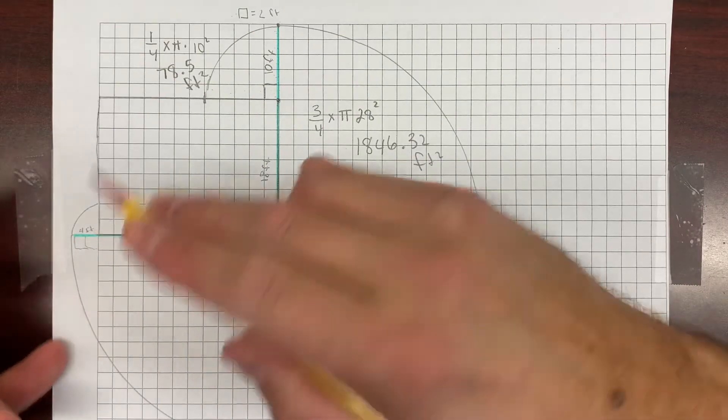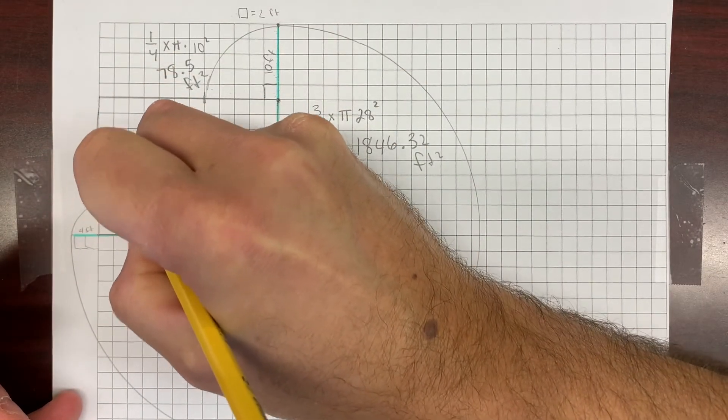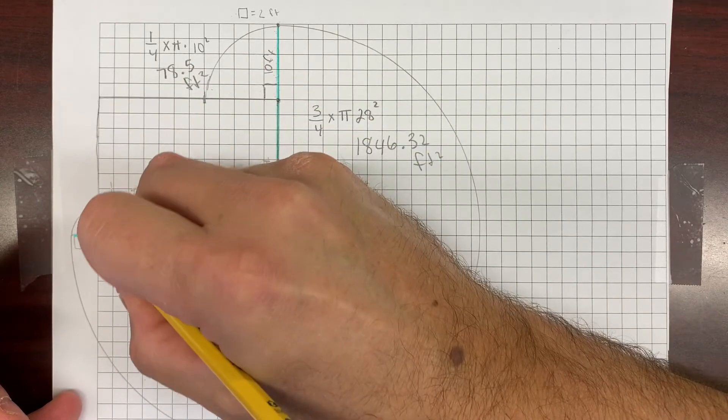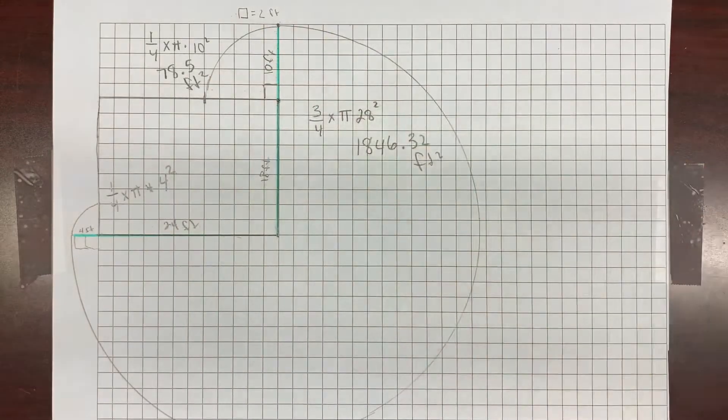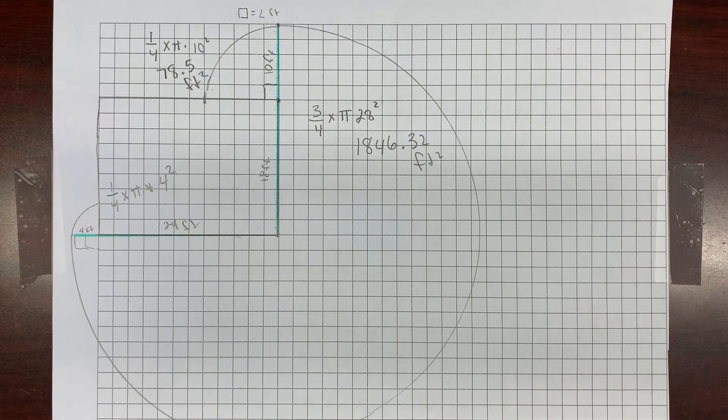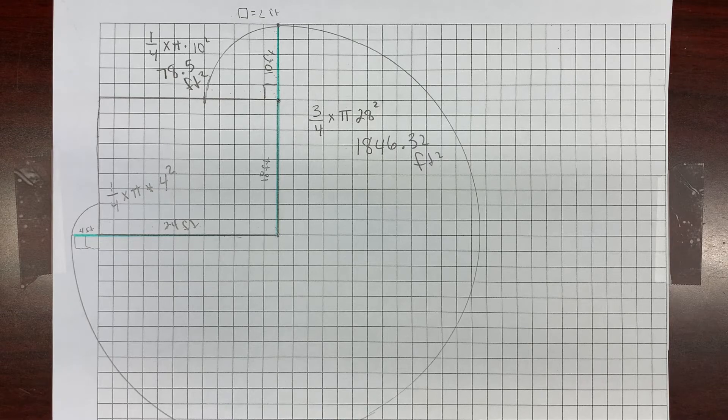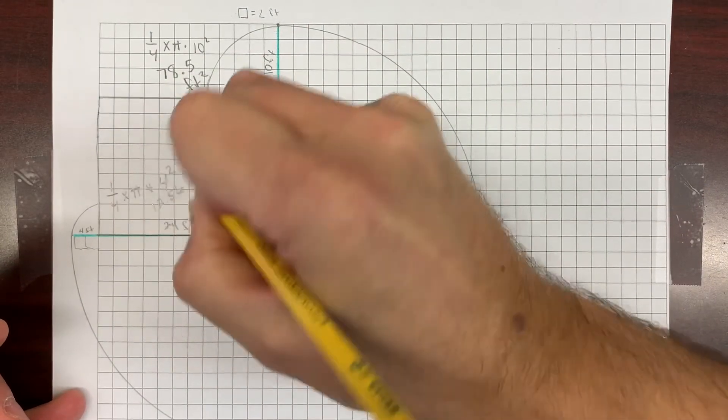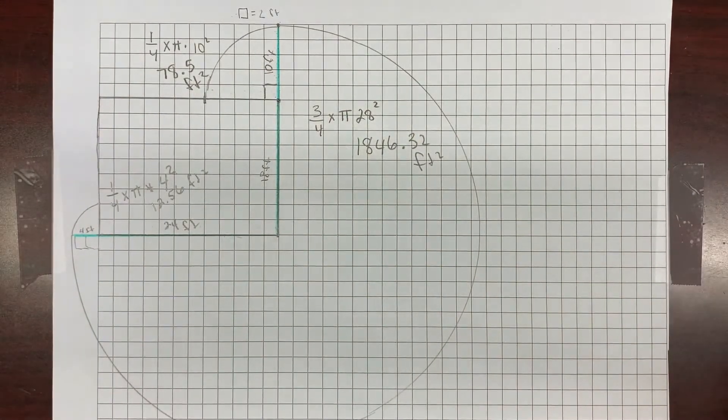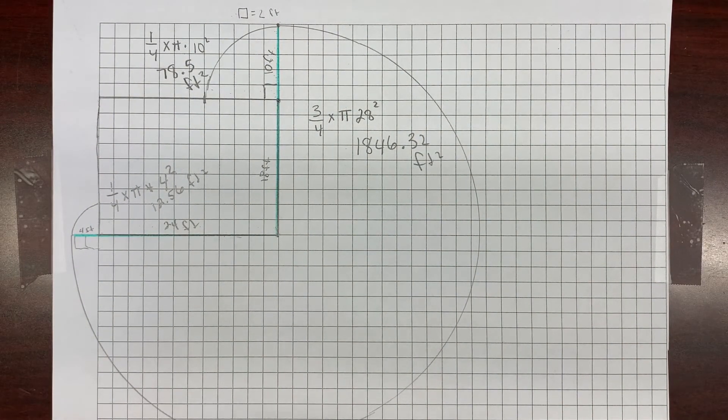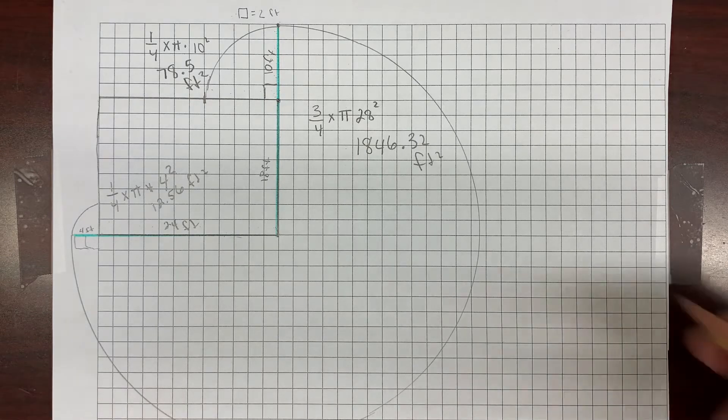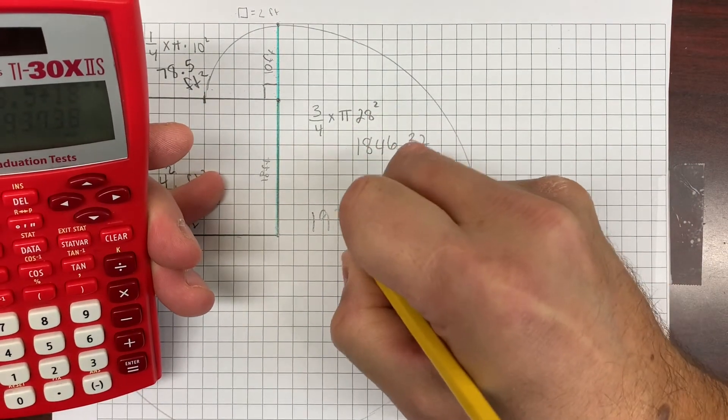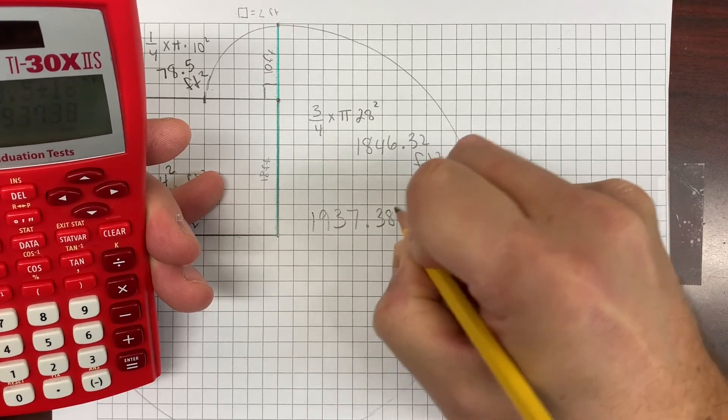And then here we have this little tiny circle here. So this is a quarter circle also. So one quarter times pi times, these are two each. So it's a four foot radius. So four squared. Plus that's going to be one fourth times 3.14 times 16. 12.56 feet squared. Let's go ahead and handle this all together now. So 12.56 plus 78.5 plus 1846.32. And that total gives us 1937.38 feet squared.